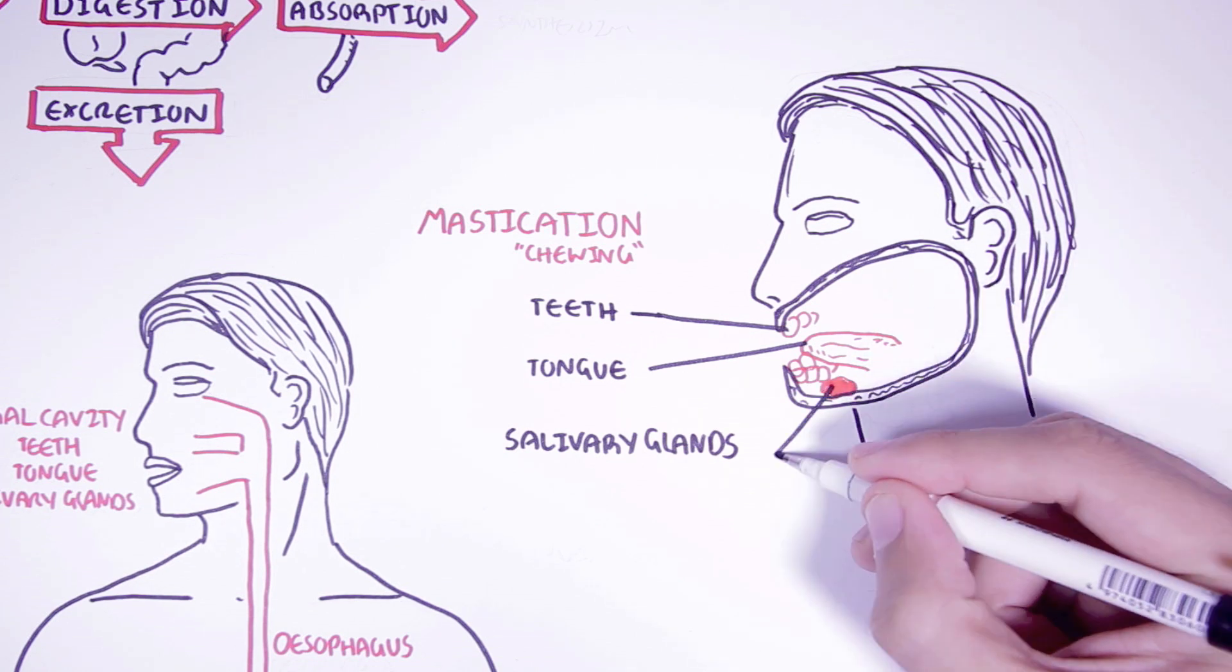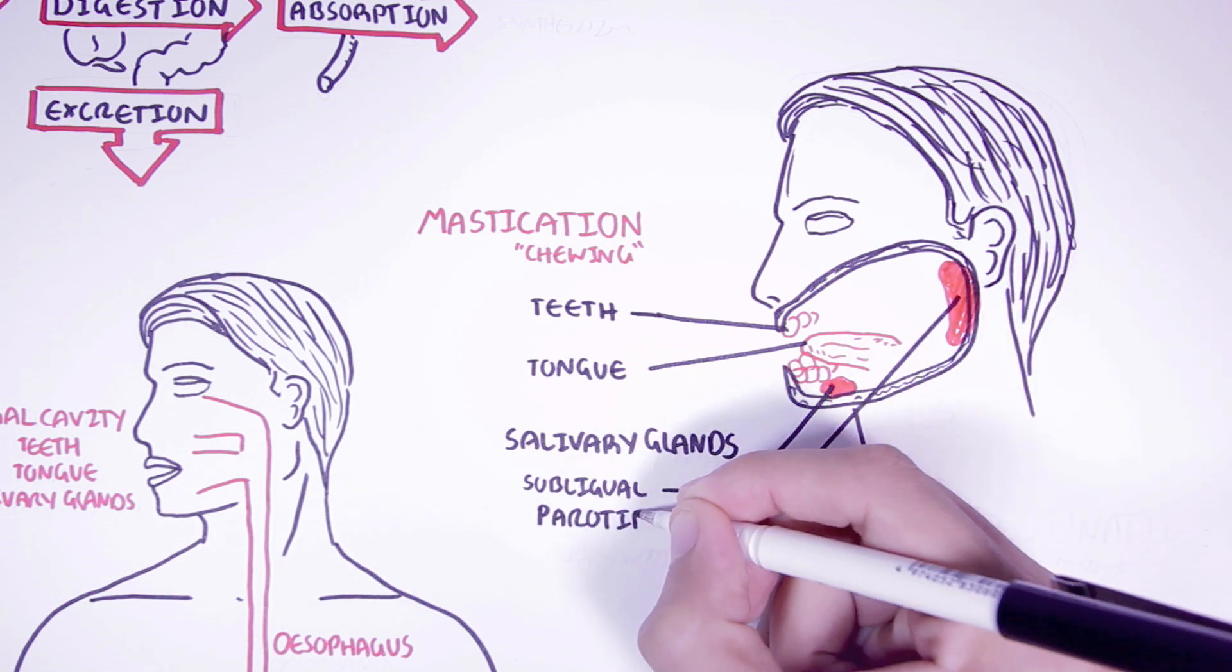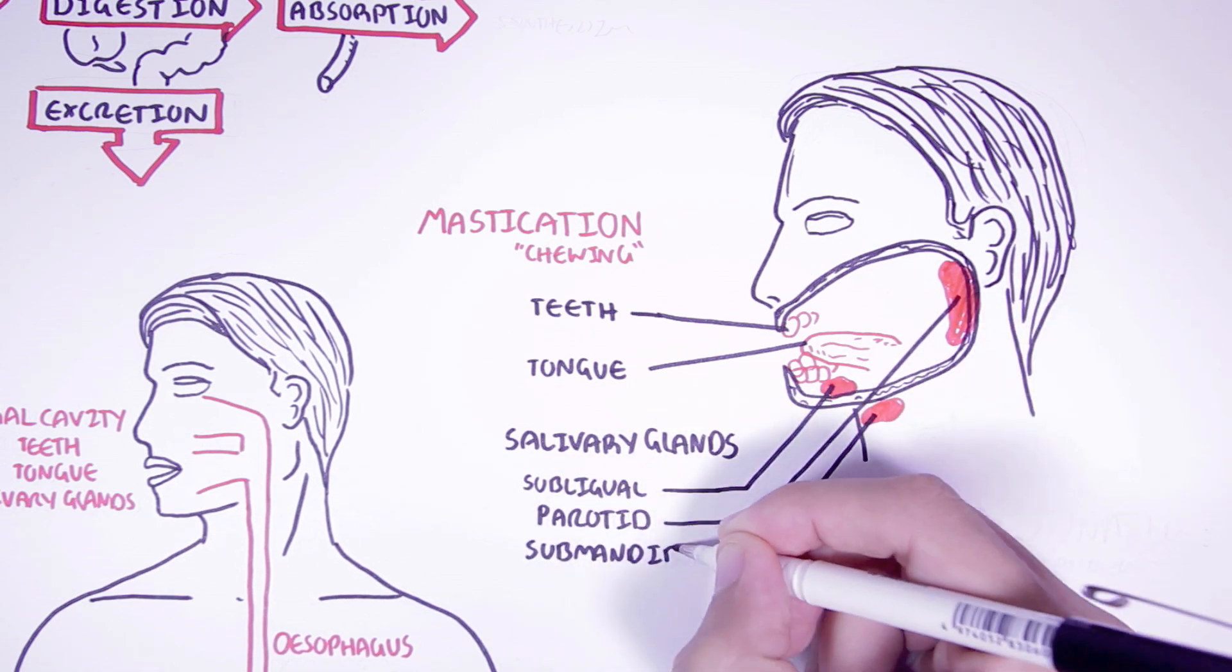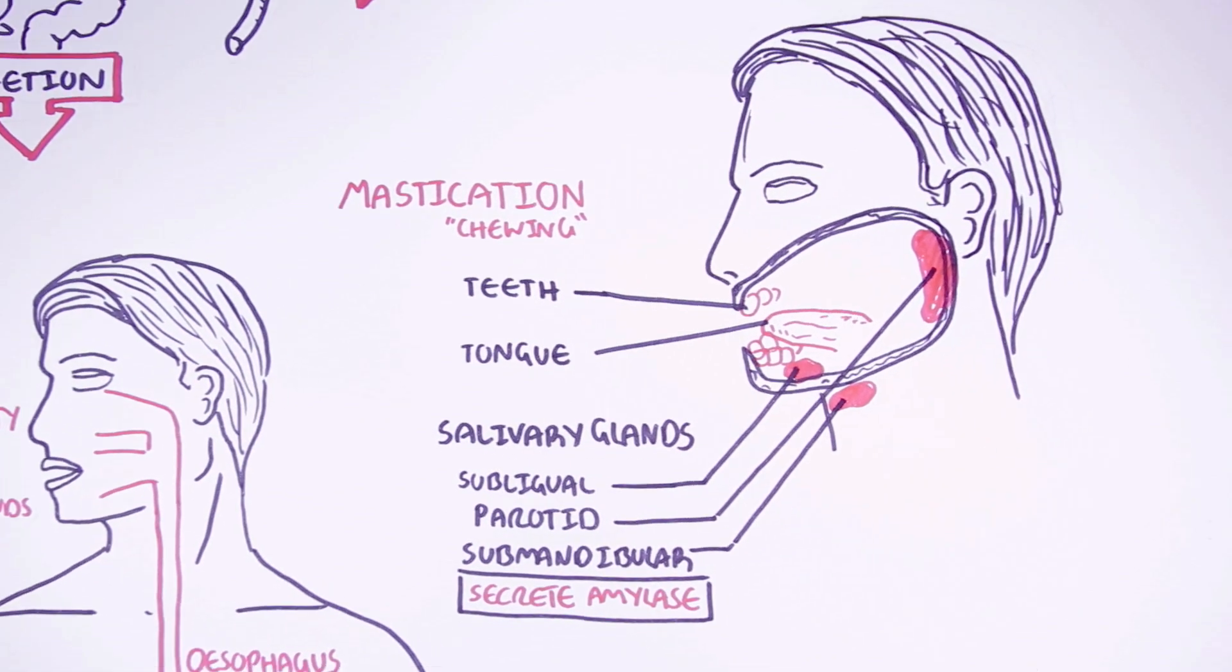There are three salivary glands: the sublingual, meaning below the tongue, parotid, and submandibular, which means below the mandible. The salivary glands also secrete an enzyme called amylase, which will initiate carbohydrate digestion.